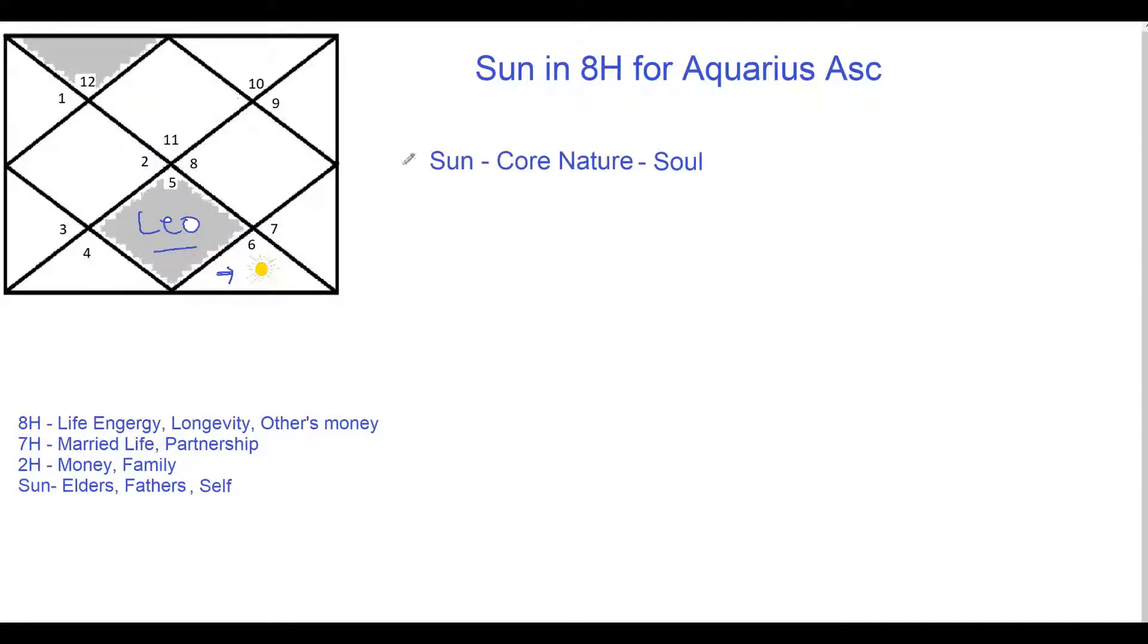Sun represents your core self, your core nature or your soul. So when that Sun is placed in the eighth house which is generally a mysterious house or it is also house of many hidden things, first thing which happens is the person comes across as someone who likes to keep many things to themselves. They don't open up very easily to their friends or family or anybody. You know they will open up only when they are sure of the person they are talking to or they are familiar with, only few selective people.